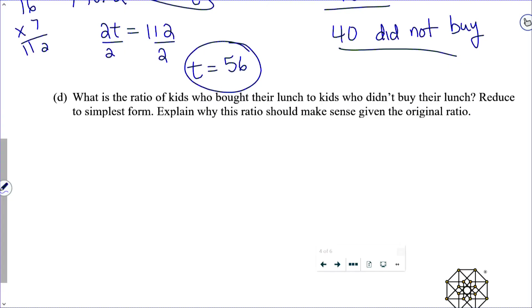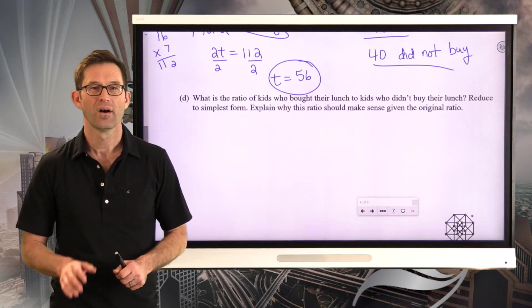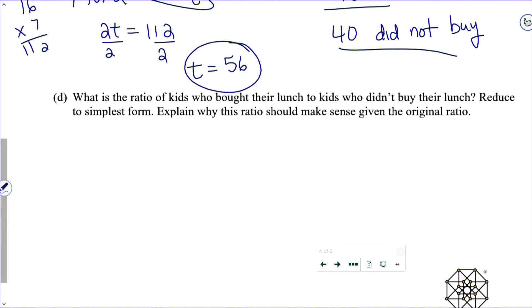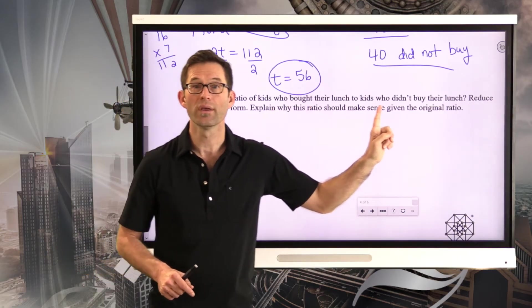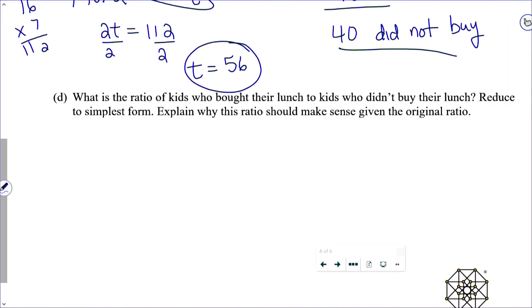So in letter D, it asks us, what is the ratio of kids who bought their lunch to kids who didn't buy their lunch? Reduce to simplest form. Explain why this ratio should make sense given the original ratio. I'd like you to work through this yourself. Well, we want the ratio of the kids who bought to kids who didn't buy. We were told that 16 kids bought and 40 didn't. Now there's your ratio, but I can put it in the simplest form by dividing both the numerator and the denominator by 8, which will give me 2 bought per 5 who didn't buy.